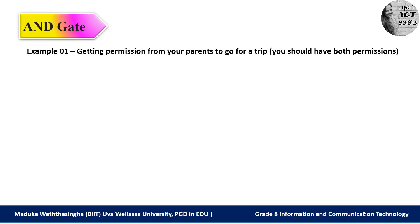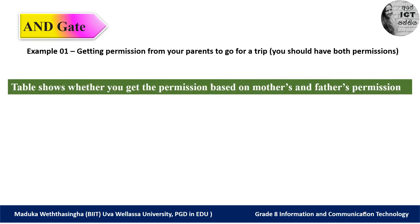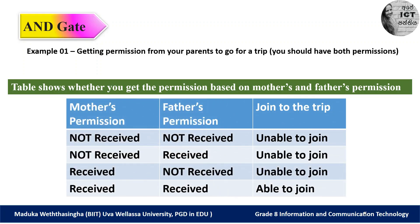Let's discuss the function of the AND gate using an example. Think about getting permission from your parents to go for a trip. From your school, you are planning to go for a trip, but your teacher advises you to bring the permission of your parents. There's a special condition: you need to get both permissions — your mother's and your father's. Let's do a table to identify how we can get both permissions.